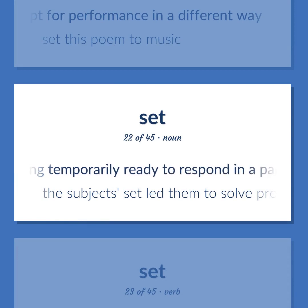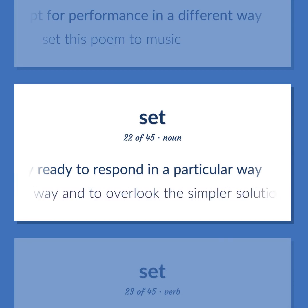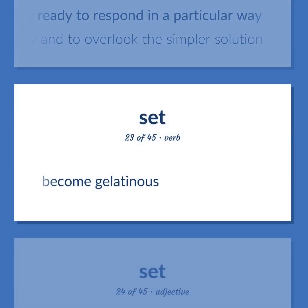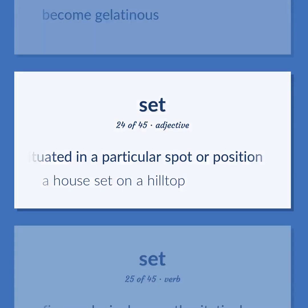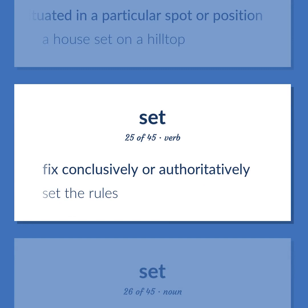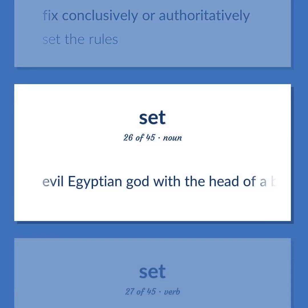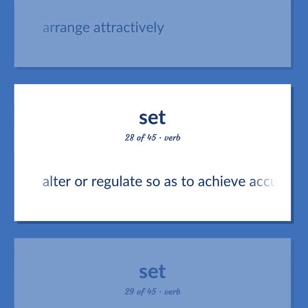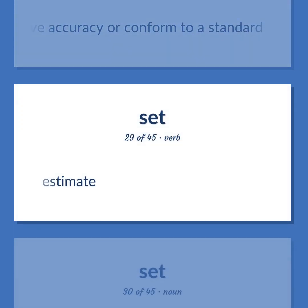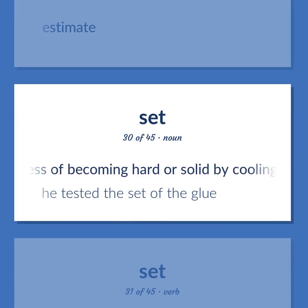Set — Psychology: Being temporarily ready to respond in a particular way — 'The subject set led them to solve problems the familiar way and to overlook the simpler solution.' Become gelatinous. Situated in a particular spot or position — 'A house set on a hilltop.' Fix conclusively or authoritatively — 'Set the rules.' Evil Egyptian god with the head of a beast that has high square ears and a long snout; brother and murderer of Osiris. Arrange attractively. Alter or regulate so as to achieve accuracy or conform to a standard. Estimate. The process of becoming hard or solid by cooling, drying, or crystallization — 'He tested the set of the glue.'